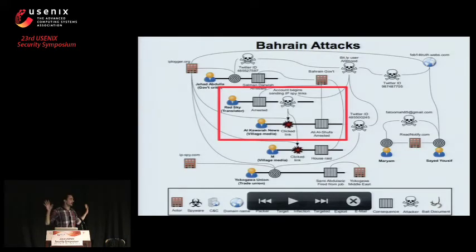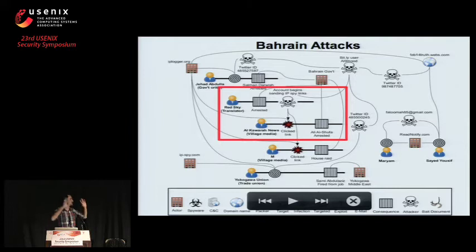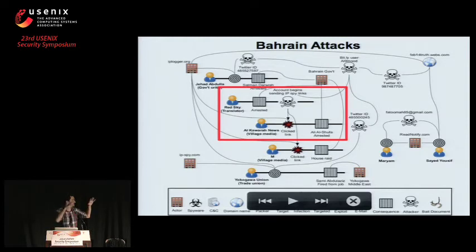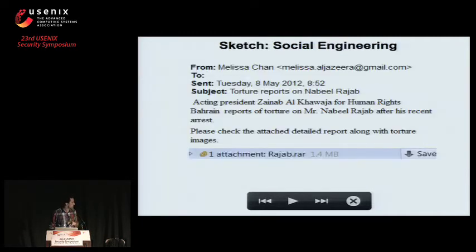In our paper we document this as part of a larger ecosystem of attacks using these so-called IP logger or IP spy links. On a diagram in our paper, I've highlighted in red the workflow I just described: Red Sky is the arrested activist whose account was compromised and then used to target the Al-Kawara News account. This gives a sense of the scope and scale of what we found — these are just representative samples. We also document similar cases in the UAE and Syria. Notably in Syria, cyber militia groups are used where the government does not appear to be directly carrying out the attacks.